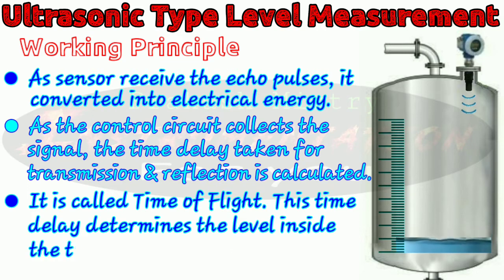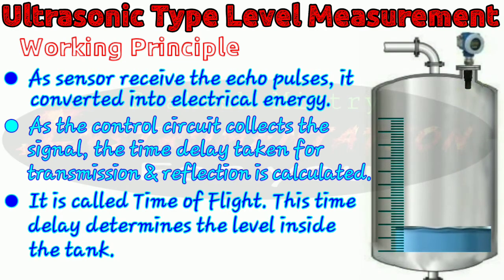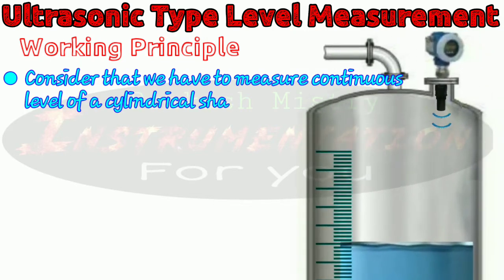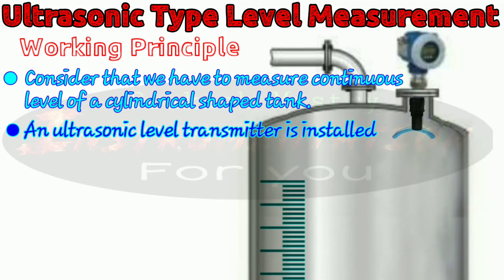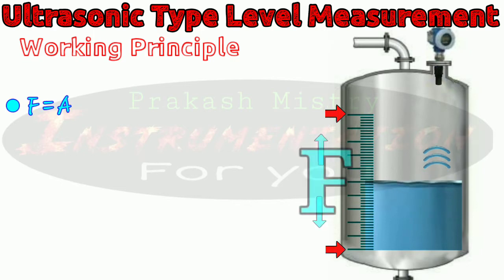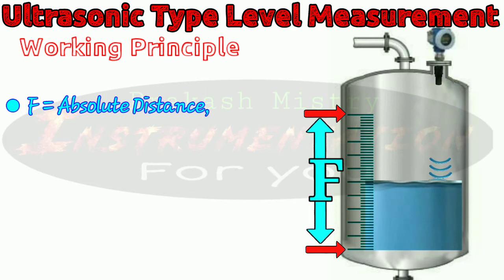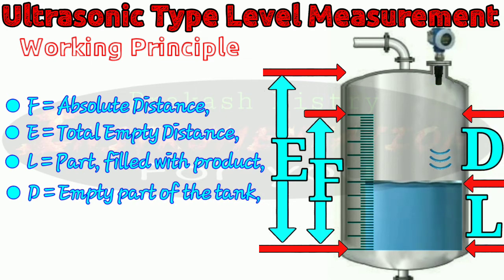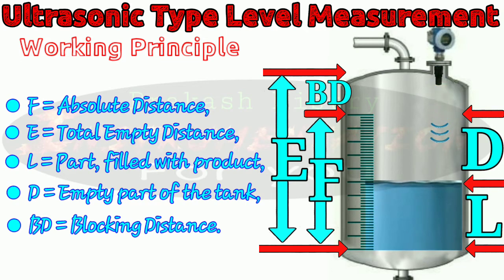This is the working principle of the ultrasonic level measurement instrument. As the control circuit receives the reflected echo pulses, it calculates the time of flight and gives the level indication. Consider that we have to measure the continuous level of a cylindrical shaped tank. The ultrasonic level transmitter is installed on the top of the tank. Here F is the absolute distance — the distance in which the level is to be measured. The downside is 0% level and the top side is 100% level. E is the total empty distance between the mounting flange of the sensor and the lowest measurable level, meaning 0% level. L is the part filled with the product, D is the empty part of the tank, and BD is the blocking distance.